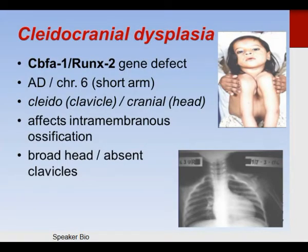Cleidocranial dysplasia is a syndrome which occurs when you have a defect of CBFA-1 or RUNX2. It's an autosomal dominant condition that manifests as absent clavicles and cranial malformations. It affects intramembranous ossification — that's why the clavicle and the bones of the skull are affected. These patients have a broad head and absent clavicles.